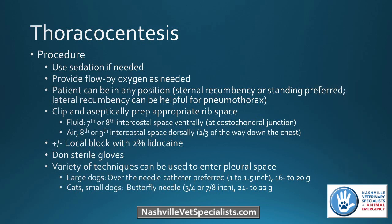If you're going to sedate your patient, do that first. Flow-by oxygen as needed. You can place the patient in any position. Sternal recumbency is preferred for pleural effusion because the fluid falls ventrally; for a big dog, sometimes we'll do it standing. For a pneumothorax, lateral recumbency can be helpful. Clip and prep the appropriate rib space. Without ultrasound guidance, the landmarks are the seventh or eighth intercostal space for fluid — ventral for fluid, dorsal for air. For pneumothorax, the eighth or ninth intercostal space, going more dorsally, about a third of the way down the chest.